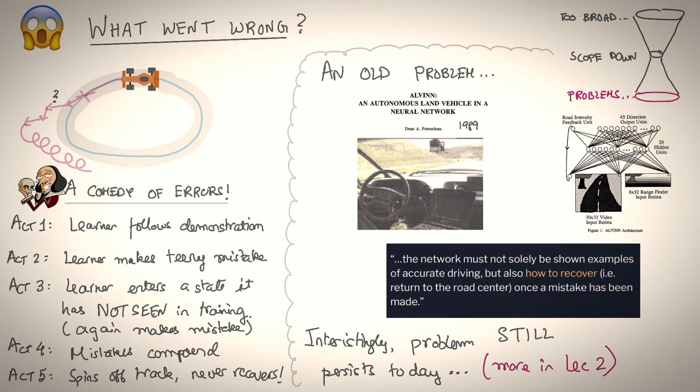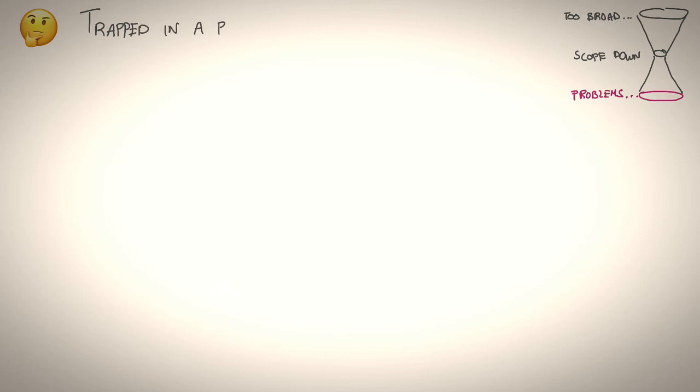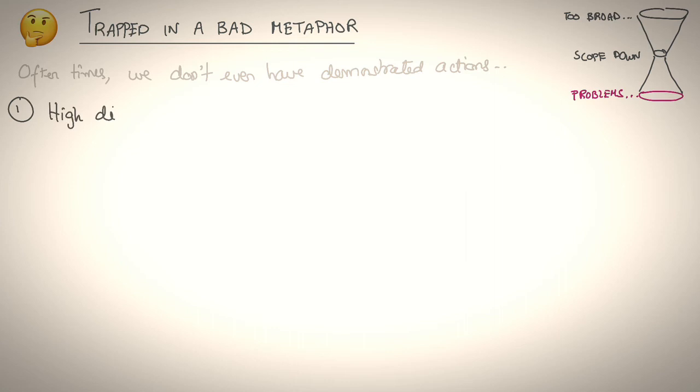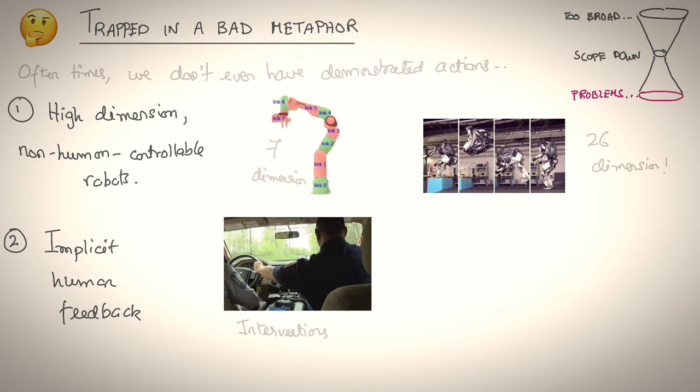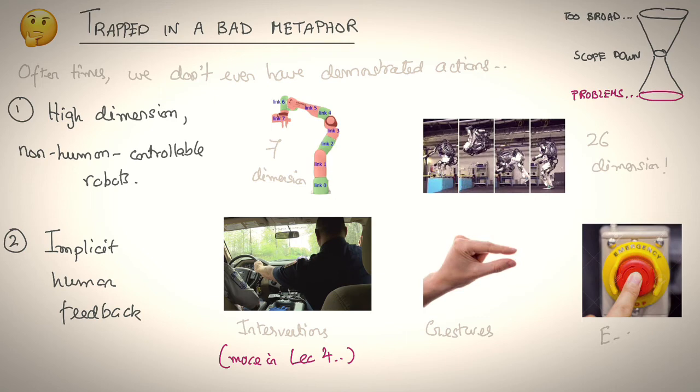Unfortunately, this is not the only problem. The more you think about it, it seems like, overall, learning a direct mapping is just a bad metaphor that we've trapped ourselves into. Because oftentimes, for many real-world applications, we don't even have demonstrated robot actions. For instance, what if your robot is a high-dimensional, non-human-controllable robot, like a seven-dimensional robot arm that's hard for a human to control, or even a 26-dimensional back-flipping humanoid robot? Or, what if the human is giving you implicit feedback, for example, teaching you by intervention, something we'll talk about in Lecture 4, or by showing you gestures, or even by pressing e-stops when things go wrong?